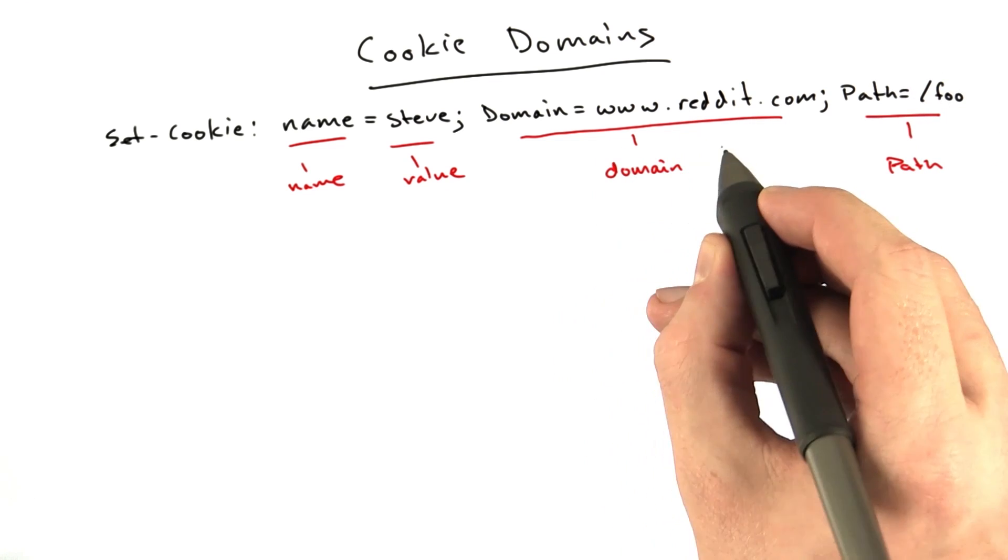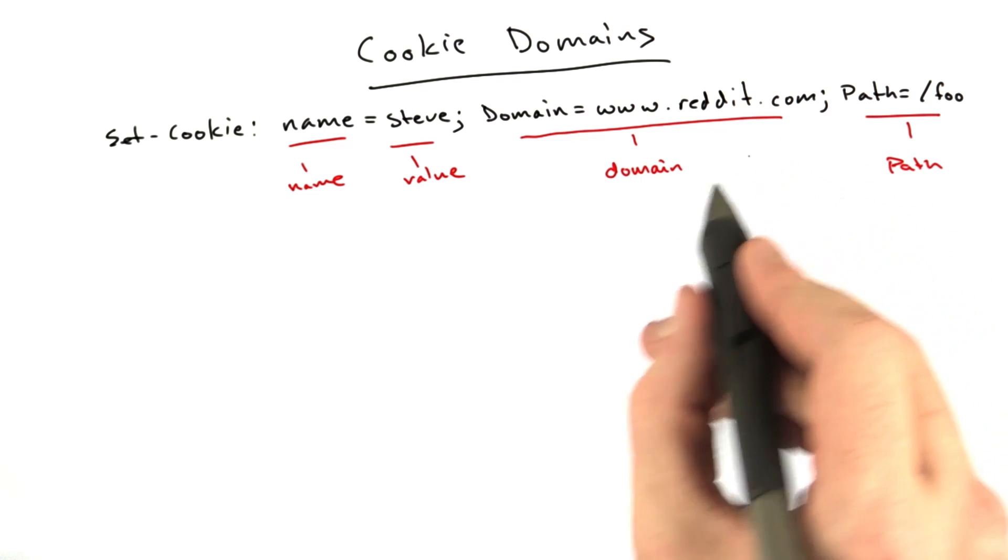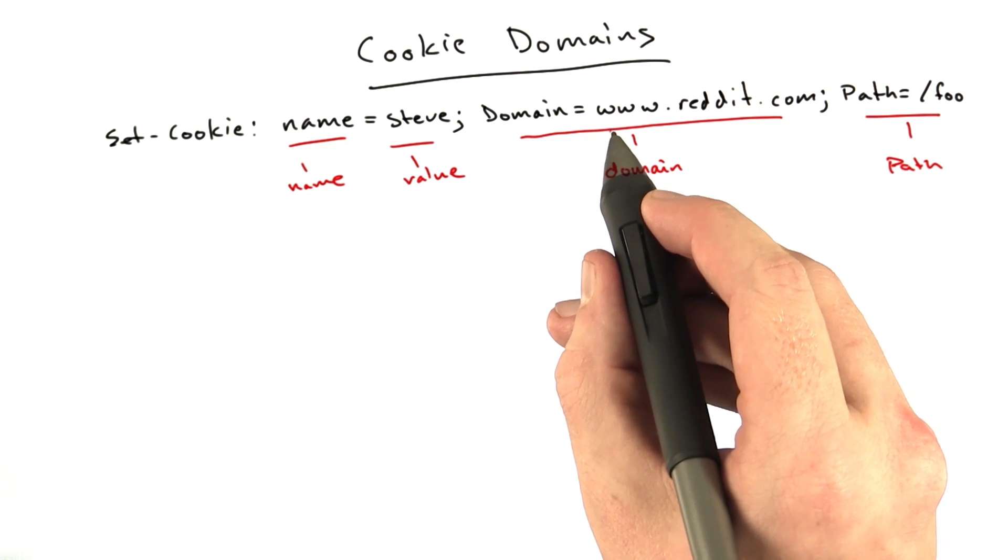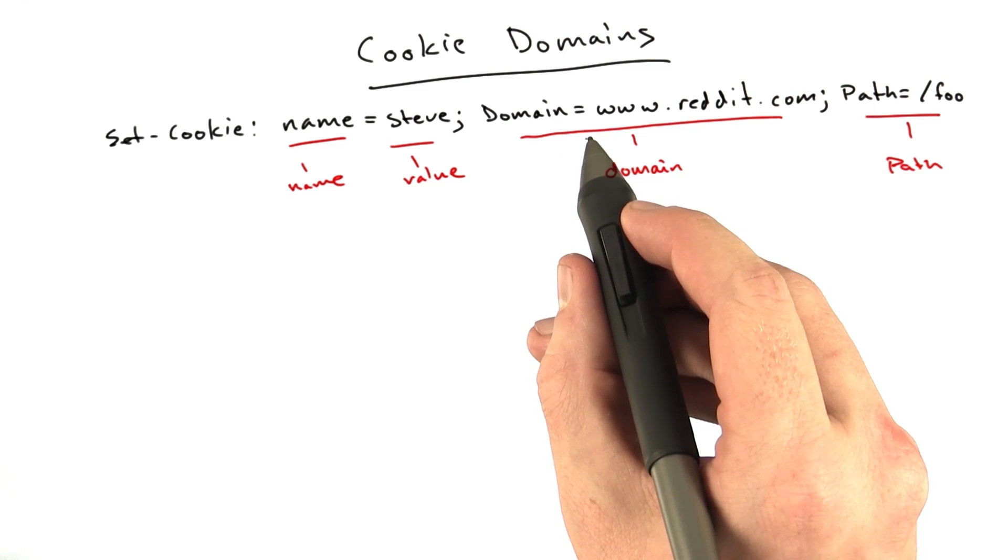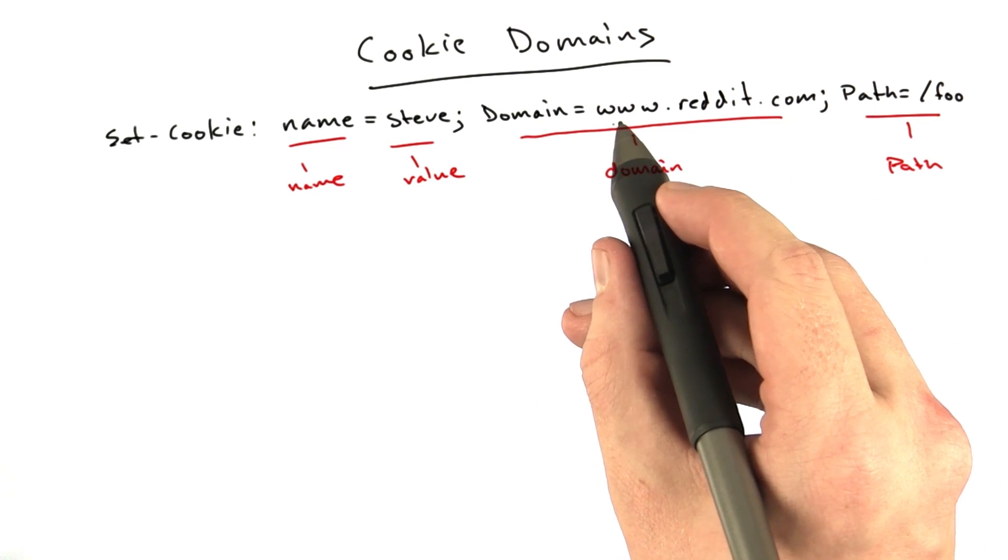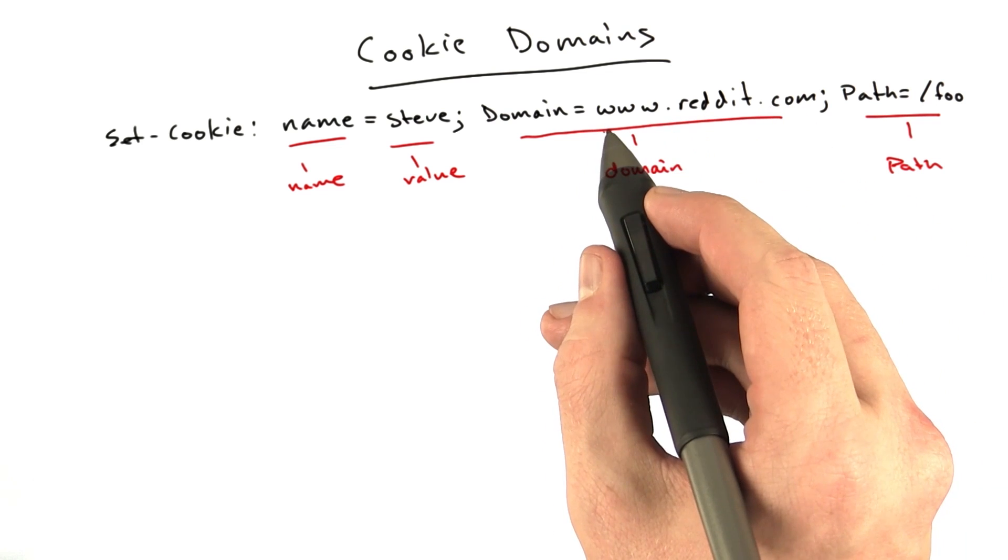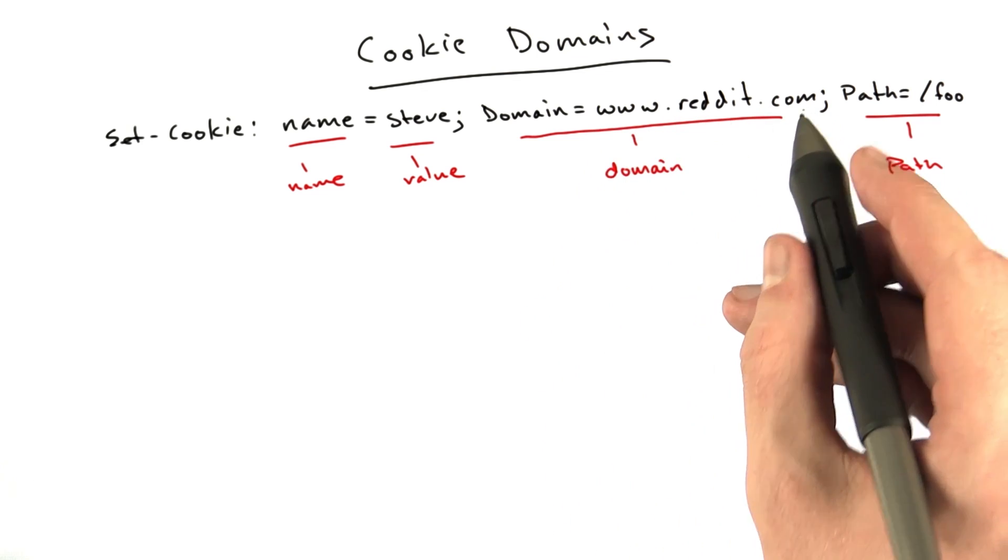The domain is much more interesting and much more complex. Let's talk about this a little bit. This means that basically this cookie will not get sent by the browser to the server unless the server's domain is www.reddit.com, or basically ends with www.reddit.com.